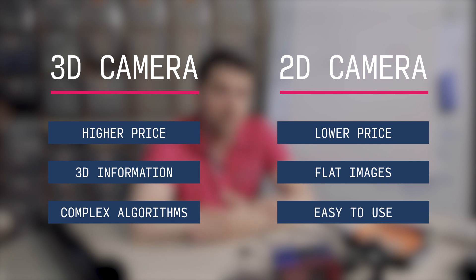To summarize: 3D cameras are more expensive, they generate more data, and the algorithms to work with that data are more complicated — but the data is more precise and contains depth information. 2D cameras are more widespread, with many well-developed algorithms available, but for some applications the precision we get is not enough.